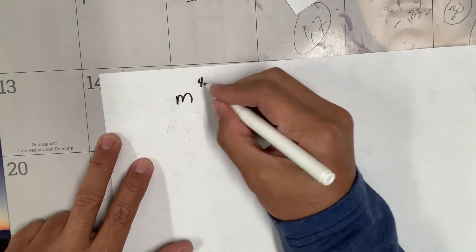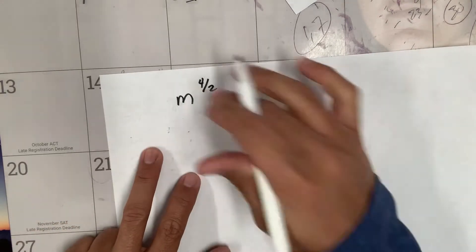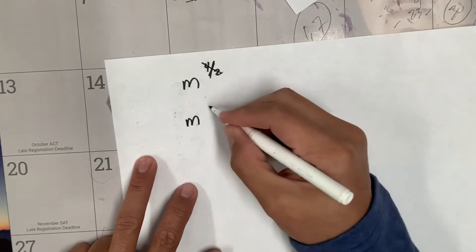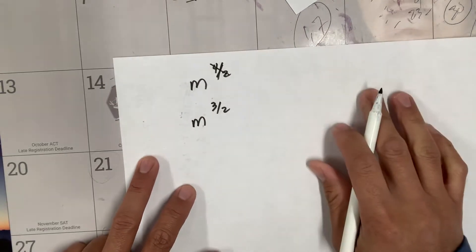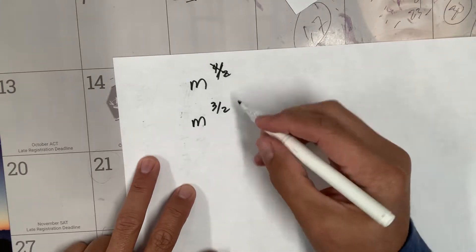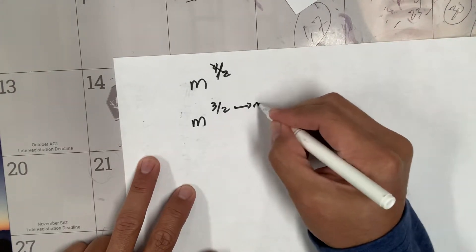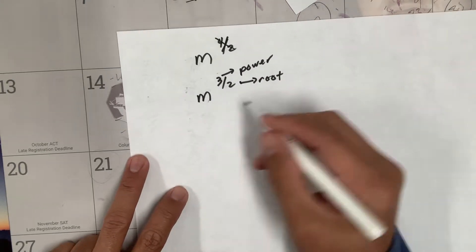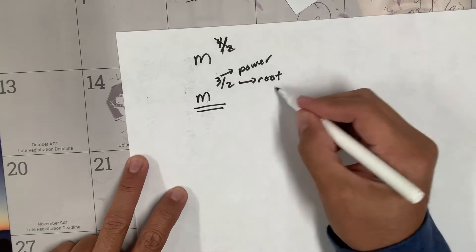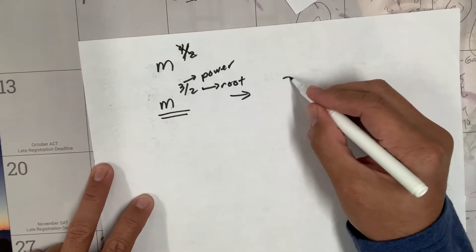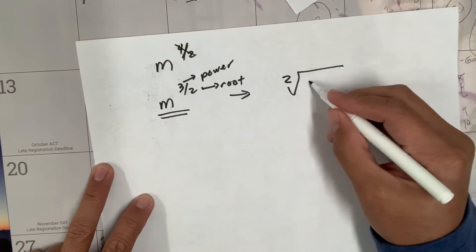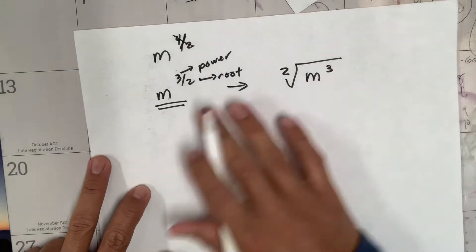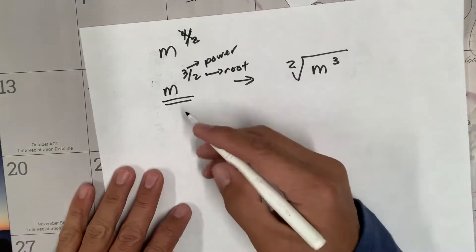Now let's do the vice versa. What if I give you m to the three-halves? Here, the denominator is two - that's your root - and this is your power. So basically, when you're converting the exponential form to a radical form, you start with the root and m to the third power.